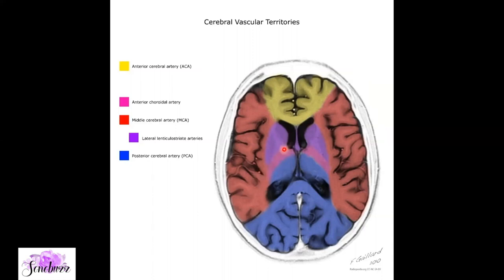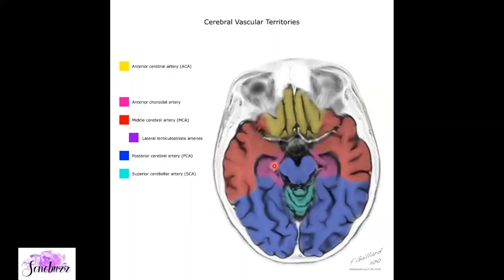The area marked in pink is the posterior limb of the internal capsule — a very commonly affected area where the patient will present with dense hemiplegia. This is supplied by your anterior choroidal artery at inferior sections. The vermis and cerebellar hemisphere are supplied separately. The entire midbrain and anterior hippocampus are supplied by the anterior choroidal artery, and even a small infarct in the mesial temporal and hippocampal region can lead to transient global amnesia — making even tiny millimeter-size infarcts clinically important.